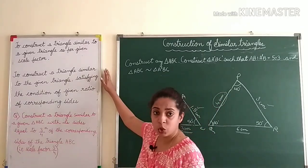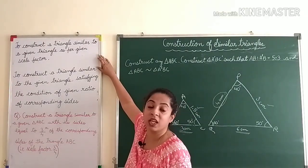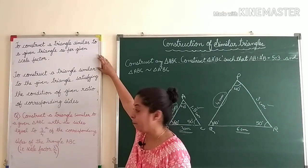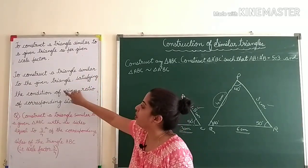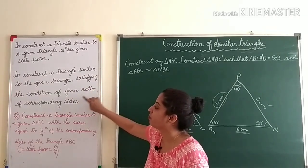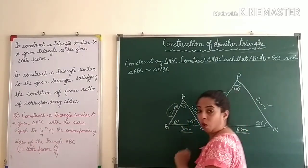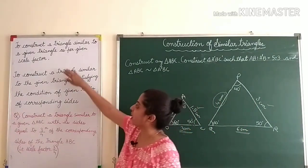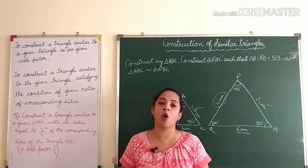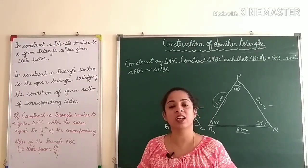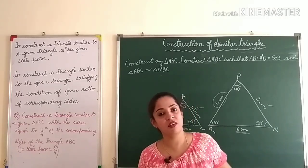Children, you may be asked to construct a triangle similar to a given triangle as per a given scale factor, or if the scale factor is not given, to construct a triangle satisfying the condition of a given ratio of corresponding sides. So they will give you the ratio. Now many children make mistakes here and lose all 3 or 4 marks, so let us understand the scale factor and ratio in detail before we proceed with the construction.